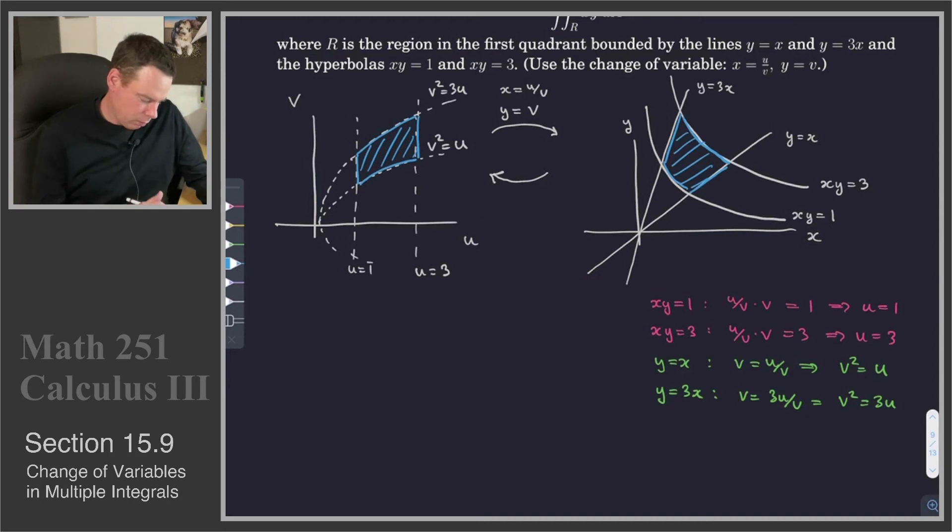So, what we have is that our region in this case is given by v is trapped between, well, it's above square root of u and below the square root of 3u. And u is trapped between 1 and 3. So, there's our description of our region.